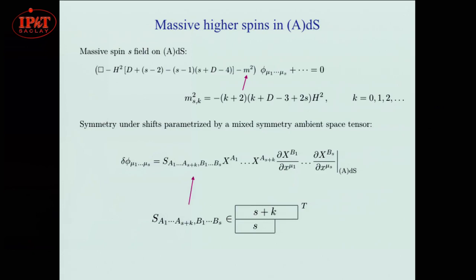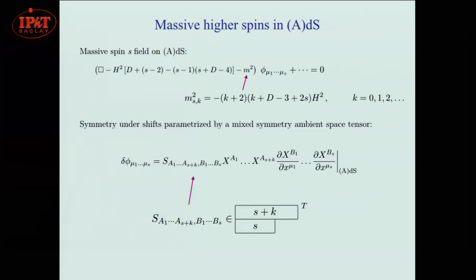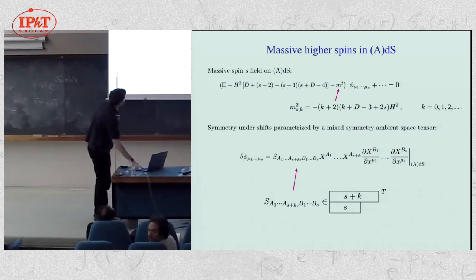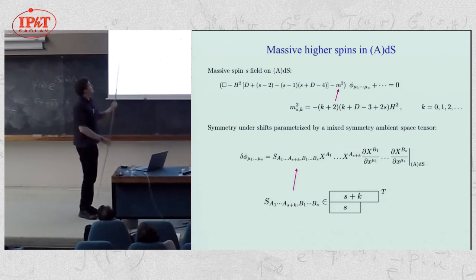In response to a question: these are all short representations in the sense that the Laplacian is a Casimir for the ADS group.